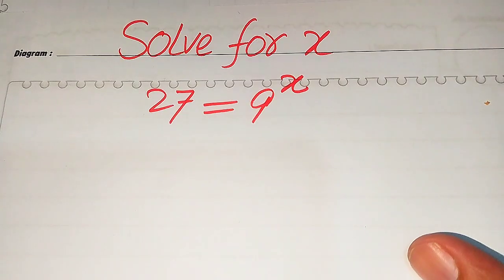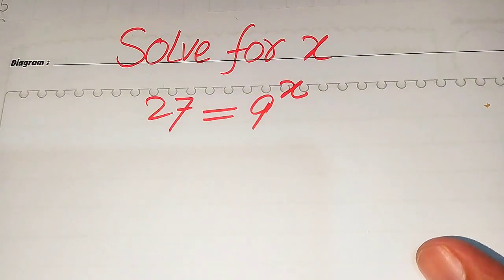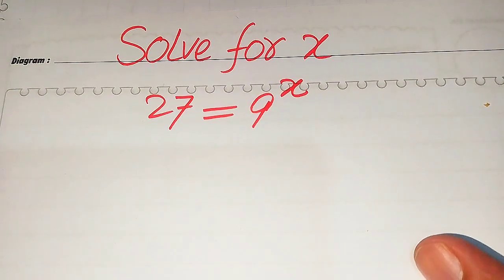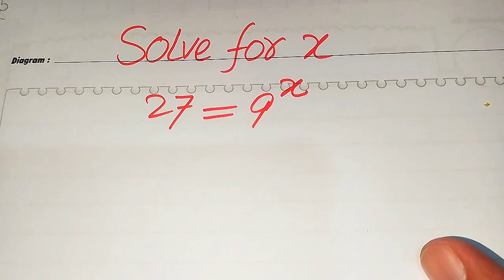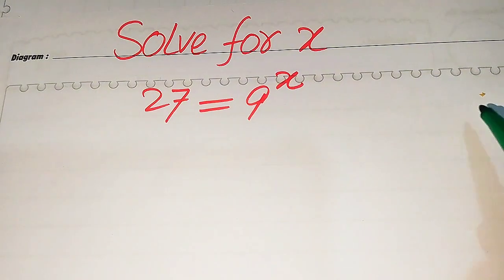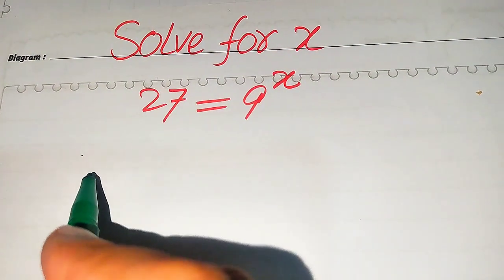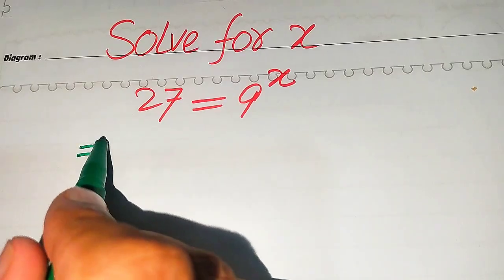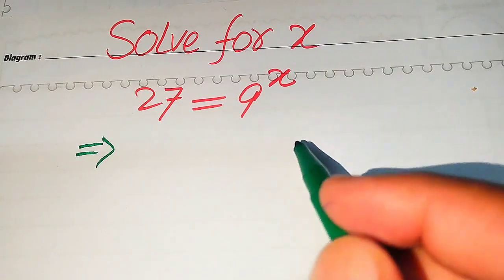There are many ways to solve this equation. One method is to apply the log on both sides, and the other method is to make the bases on both sides into prime factors form and easily get the values of x. If you have any other method in mind, please don't hesitate to write it in the comment section. The first thing we are going to do is use the prime factorization technique.